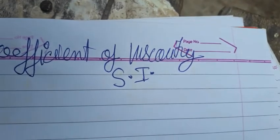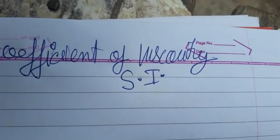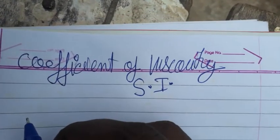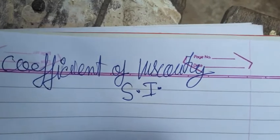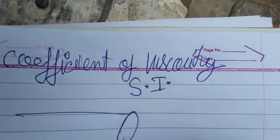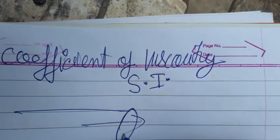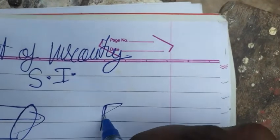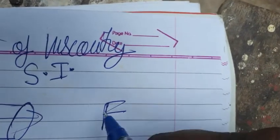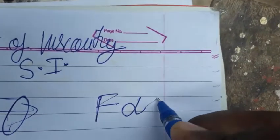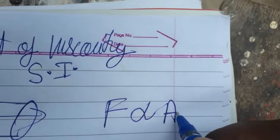Coefficient of viscosity is the internal friction of the liquid. When the liquid is flowing through a pipe, if the area is more, the velocity will be more, so the viscous force is directly proportional to the area of the pipe.